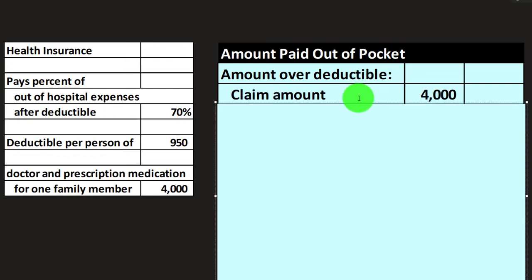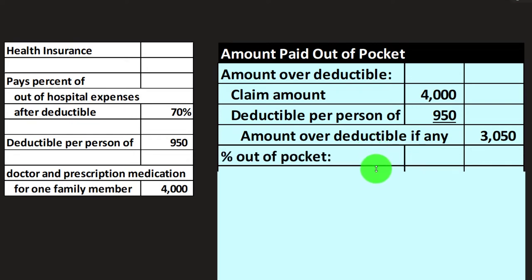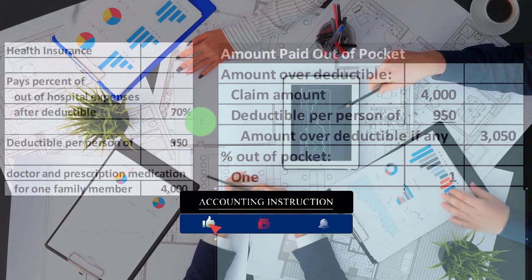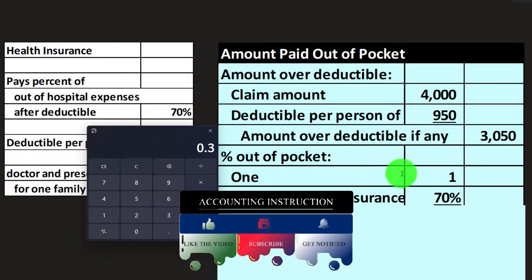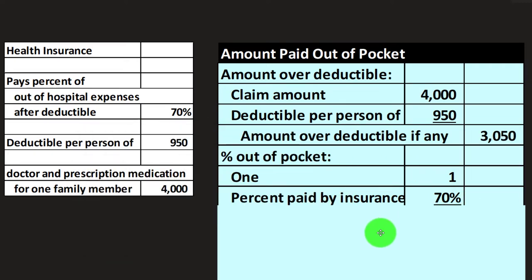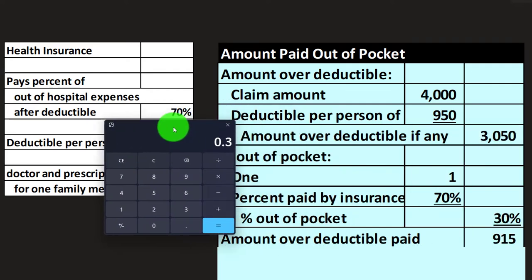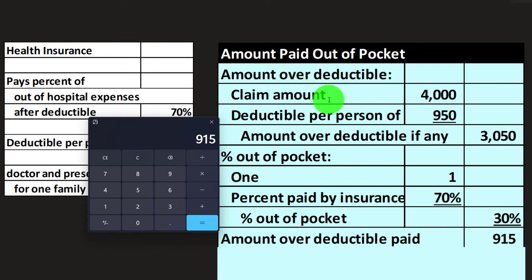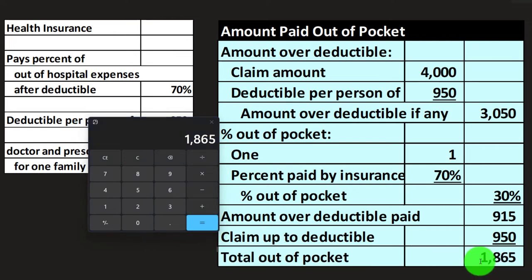Another way to calculate the amount paid out of pocket: start with the amount over the deductible — claim of $4,000 minus deductible of $950 equals $3,050. Then go directly to the percent out of pocket. If the insurance company pays 70%, we pay the remaining 30% (1 minus 0.7 equals 0.3). So 30% of $3,050 gives us $915. Then add the deductible: $915 plus $950 equals $1,865 out of pocket — same result as before.